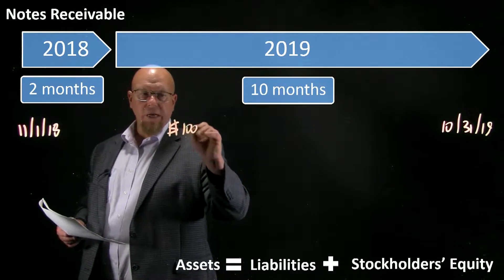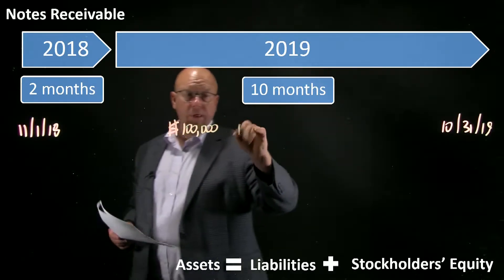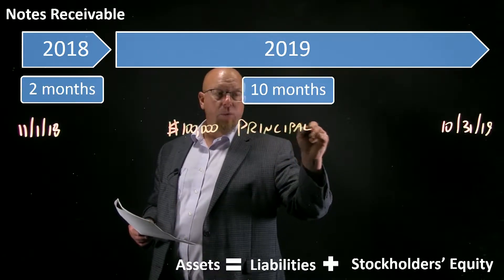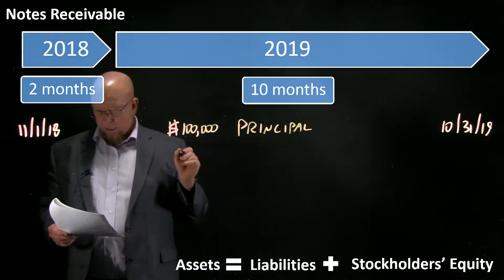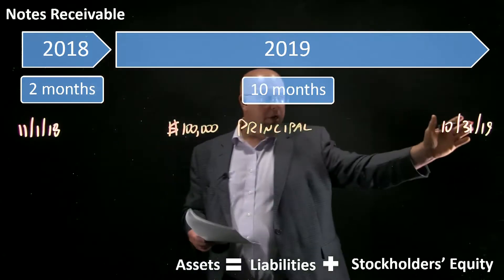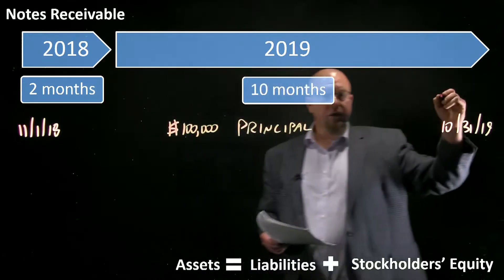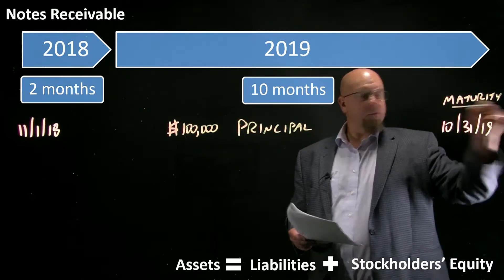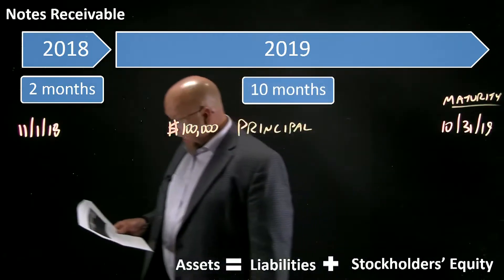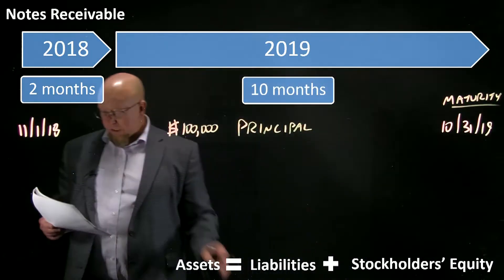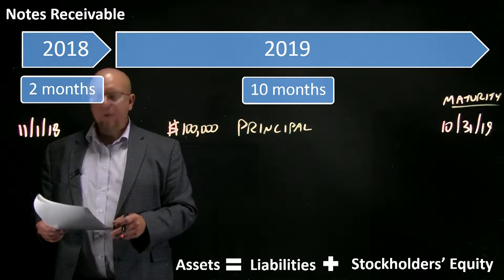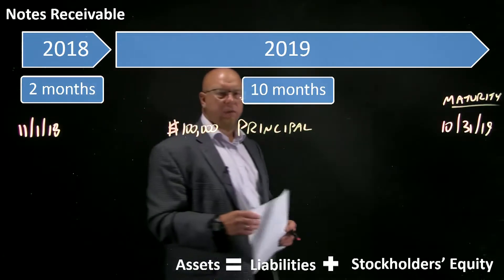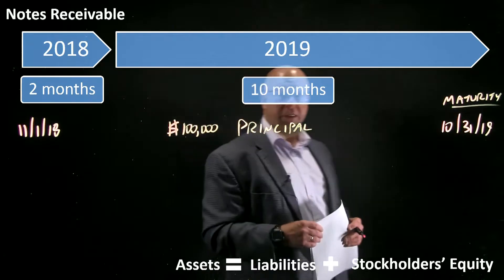The principal amount is $100,000 — that's the amount we are lending. The maturity date is Halloween 2019, and principal and accrued interest will be repaid at maturity. That might be a little different from what you've seen, because with mortgages or car loans, each payment in a fully amortizing loan includes a portion of principal and a portion of interest.